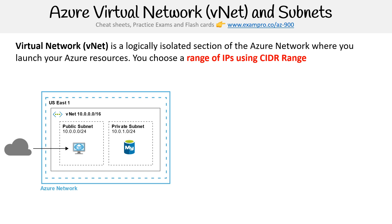In the public subnet we have a virtual machine, and in the private one we have a database. The public subnet can actually have access to the internet, while the private one does not. Not all services require a VNet, but most do, because you have to put your resources somewhere and they have to go into a virtual network associated with an IP address, whether it's public or private. And then there are other network controls involved.